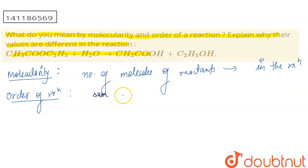So basically, this is the sum of the powers. The sum of the powers that we have in the rate law for the reactants. The sum of the powers of the concentration of the reactants is the order of the reaction.